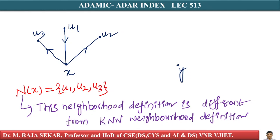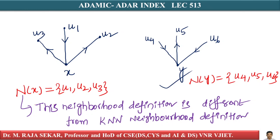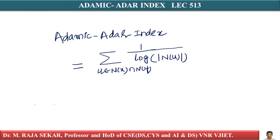In the case of graphs, any user connected to a vertex — for example, vertex Y — is part of its neighborhood. Vertex Y has some other vertices U4, U5, U6 connecting to it. Therefore, the neighborhood of Y is U4, U5, U6. Now, the formula for Adar Index between two vertices X and Y is: summation over U that belongs to N(X) intersection N(Y) of 1 divided by log of |N(U)|.